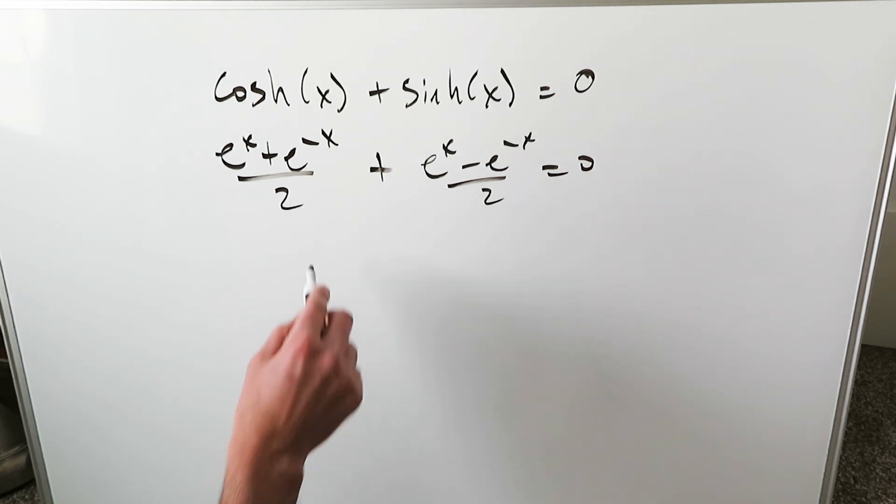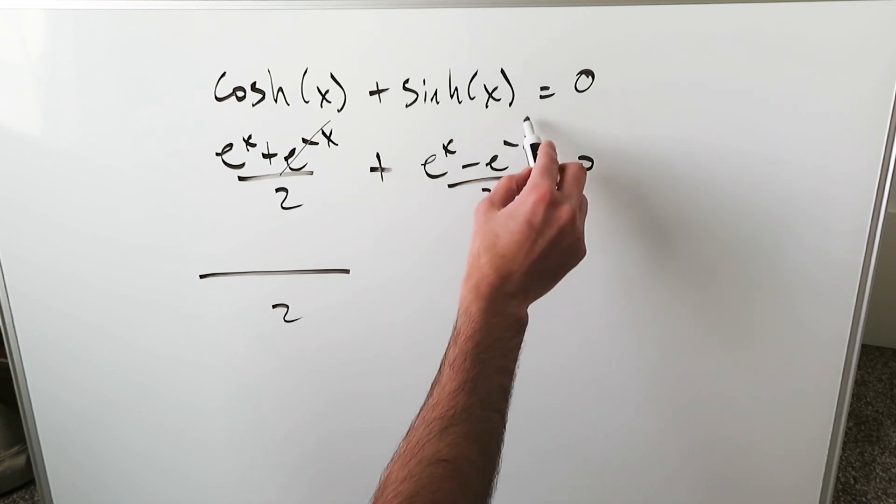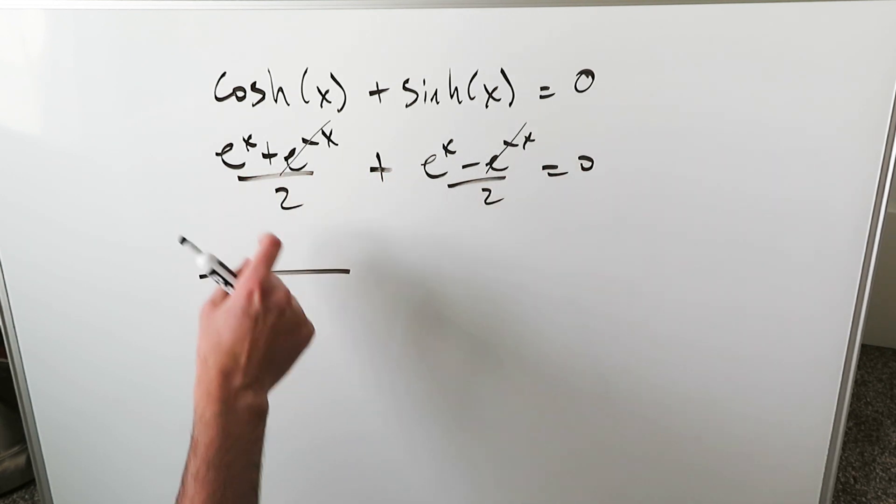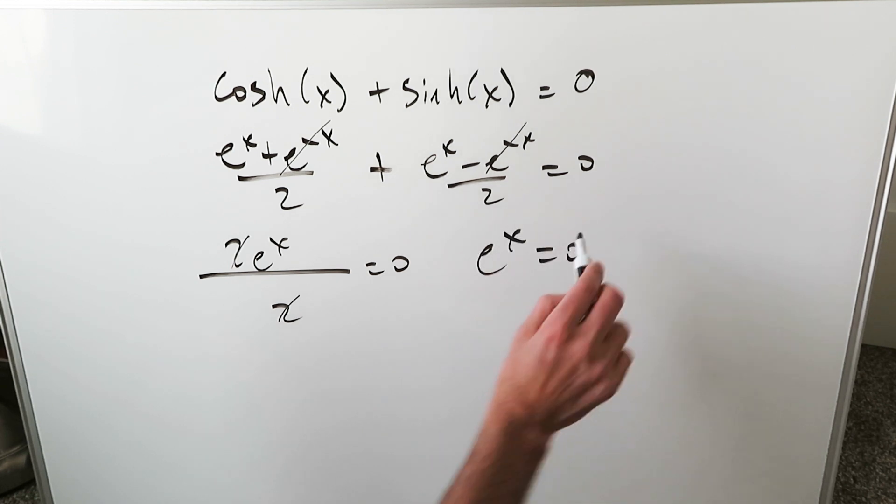Common denominator. Bring everything under it. When you do, this item cancels out with this. You have these two items which add, and you have 2e to the x equals 0. You can simply cancel these out. You're looking at e to the x equals 0.